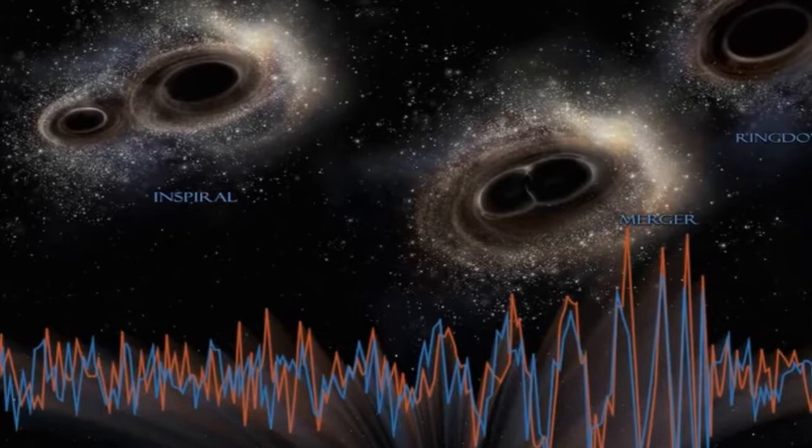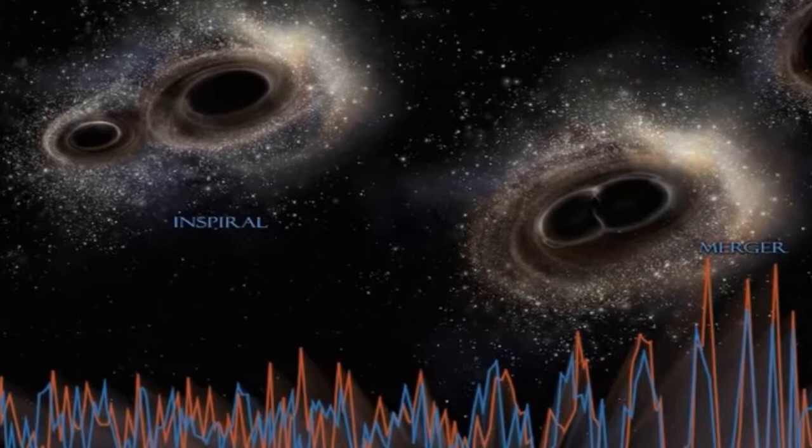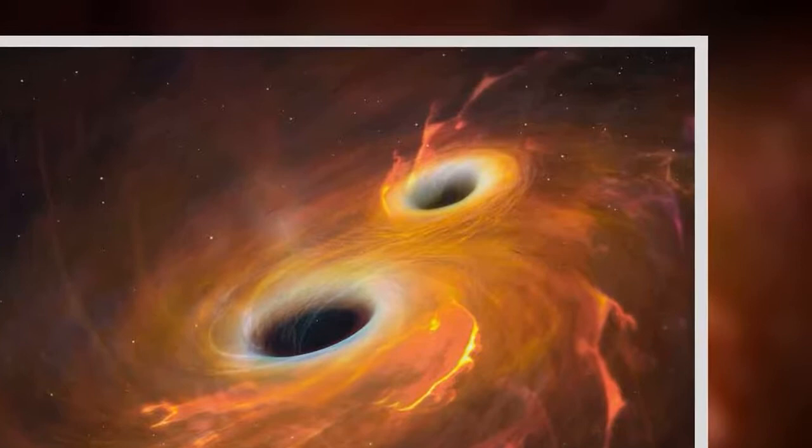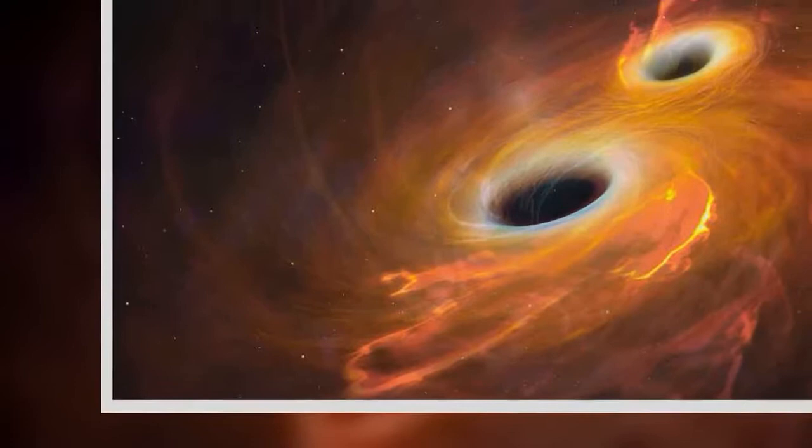The right-hand side of the image shows the final stages of the merger, called the ringdown. At this point, the merged black hole rings like a bell, but this ringing gradually decreases as more energy is transmitted in the form of gravitational waves.